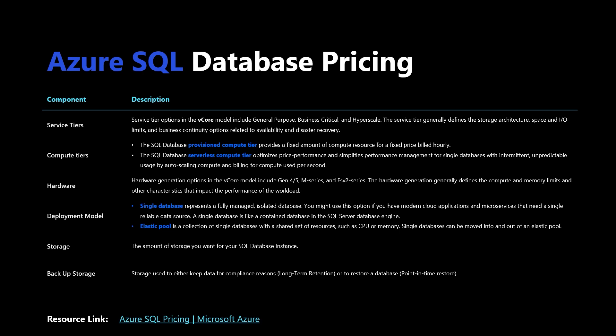There's also a deployment model — you can either deploy a single database or an elastic pool. A single database represents a fully managed, isolated database, useful if you have a modern cloud application and microservices that need a single reliable data source. This is what we're going to be creating today. An elastic pool is a collection of single databases with a shared set of resources such as CPU or memory, where single databases can be moved into and out of the pool and all share those defined resources.